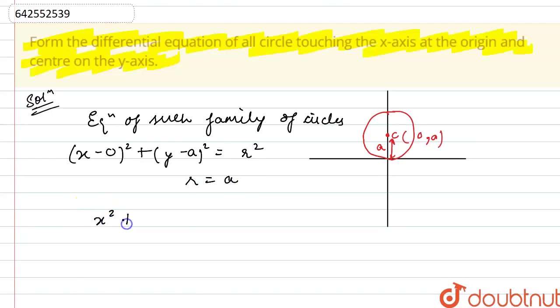This will become x square plus y minus a whole square equals a square. Now, on simplifying this, x square plus using a minus b whole square,